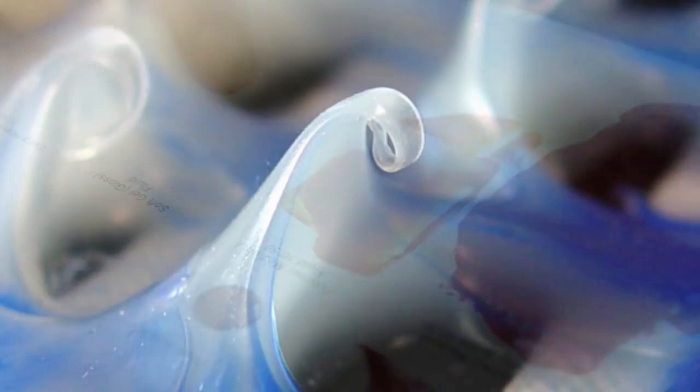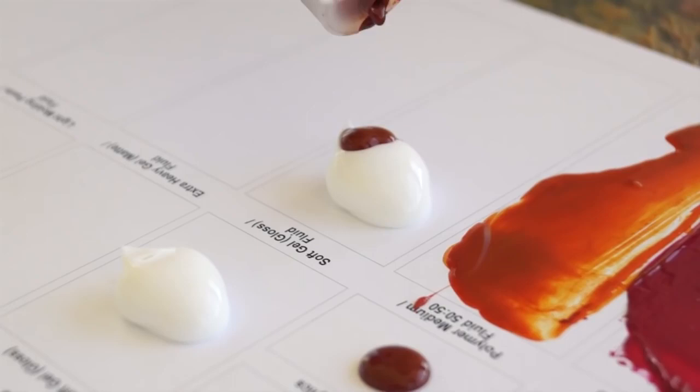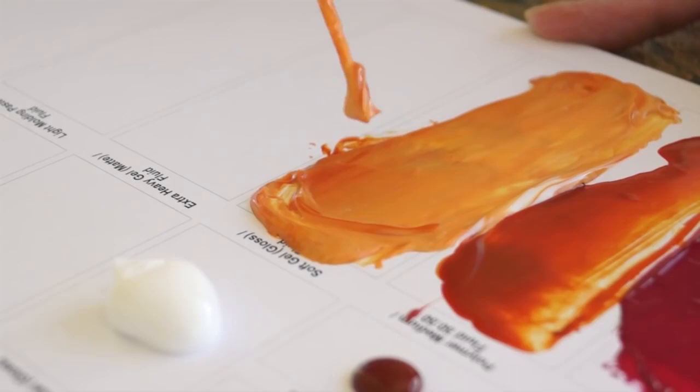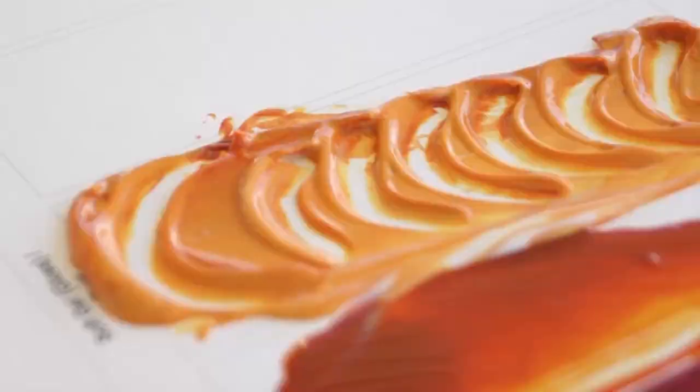Gel mediums offer many ways to extend color or build texture, and are available in a range of consistencies and sheens. Soft gel gloss is a little thinner than heavy body paints, and can be used to extend colors to create brilliant glazes. Peaks or tool marks will relax as the gel dries. Both soft gel gloss and gloss medium can be used as adhesives for collage or mixed media.